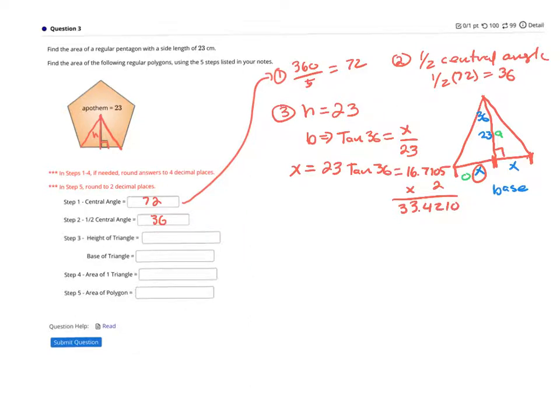So the height of my triangle is 23. The base of the triangle is 33.4210. Next step is to find the area of one triangle. Area is equal to base times height divided by 2. So that will be my base, 33.4210, times my height, 23, divided by 2. When you put that in your calculator, you end up with 384.3410.